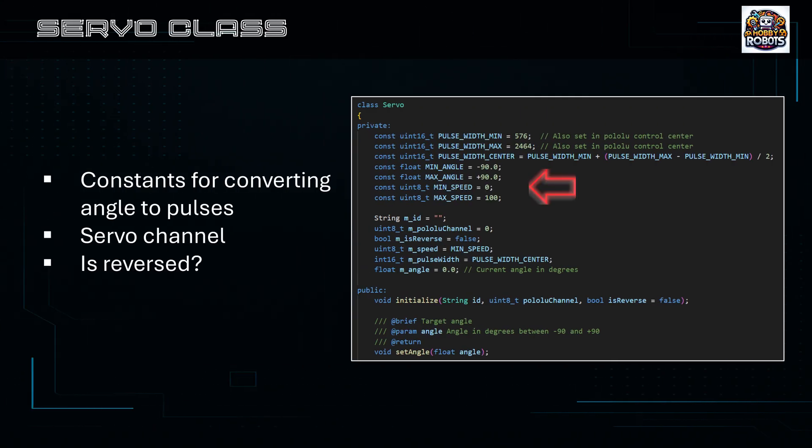The servo class holds constants that describe the physical parameters for pulse width or PWM, angles and speed, and whether the servo rotation should be reversed. The servo is initialized with an ID, the servo controller channel, and whether it's reversed. When the set angle method is called it will use the constants to calculate the desired PWM signal to send to the servo controller.